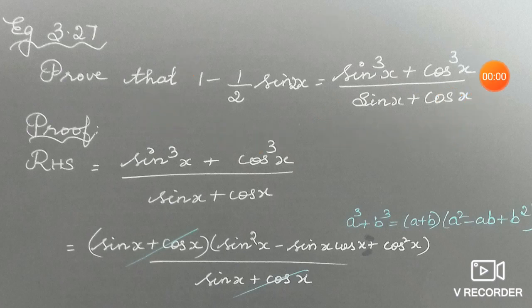Now, to prove this, let us take the right hand side. Right hand side, sin cube x plus cos cube x, the whole thing divided by sin x plus cos x.